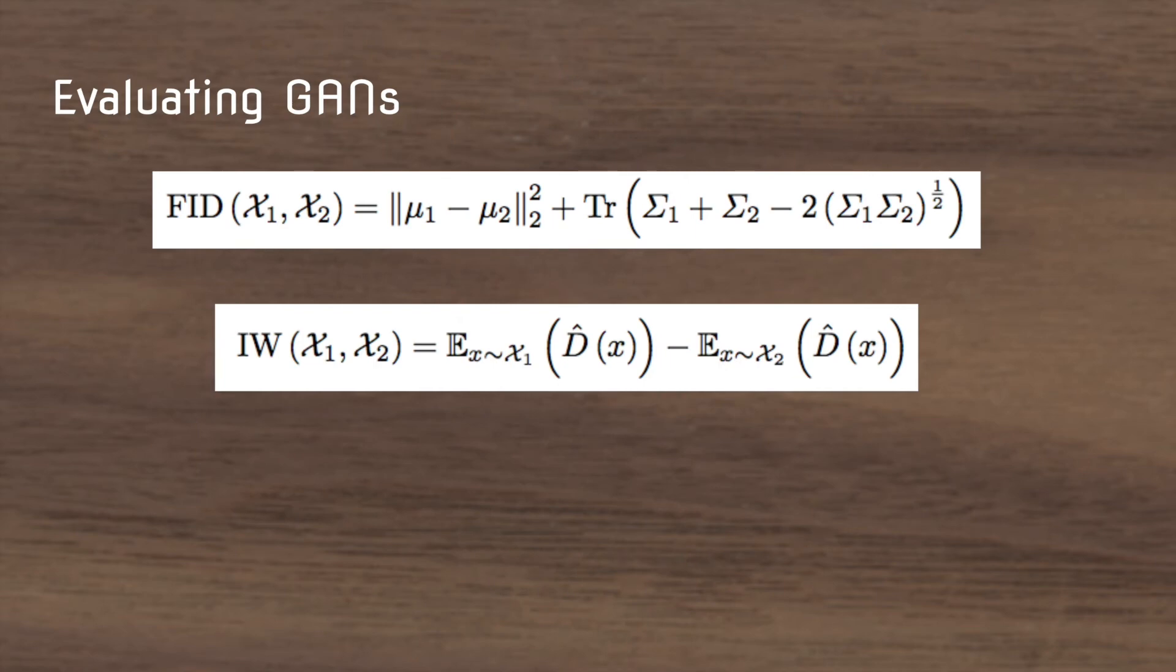Evaluating GANs is one of the most difficult things with GAN research. So the researchers in this paper choose to use the Fréchet inception distance which is given here and an independent Wasserstein critic.